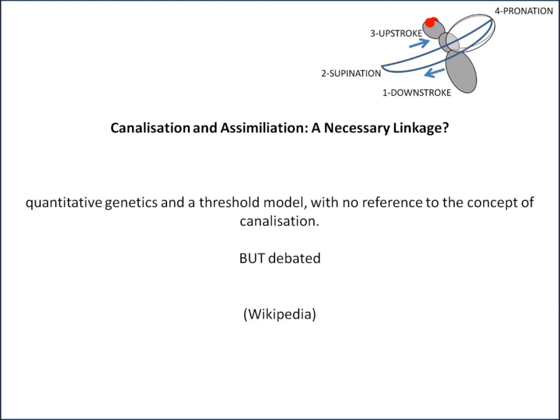A question remains: are canalisation and assimilation necessarily linked? It is possible to explain genetic assimilation using only quantitative genetics and a threshold model, with no reference to canalisation at all. However, theoretical models incorporating a complex genotype-to-phenotype map have found evidence for the evolution of phenotypic robustness contributing to genetic assimilation, even when selection is only for developmental stability and not for a particular phenotype. In that case, the simple quantitative genetics model doesn't apply, suggesting the canalisation heuristic may still be useful beyond the simpler concept of robustness.